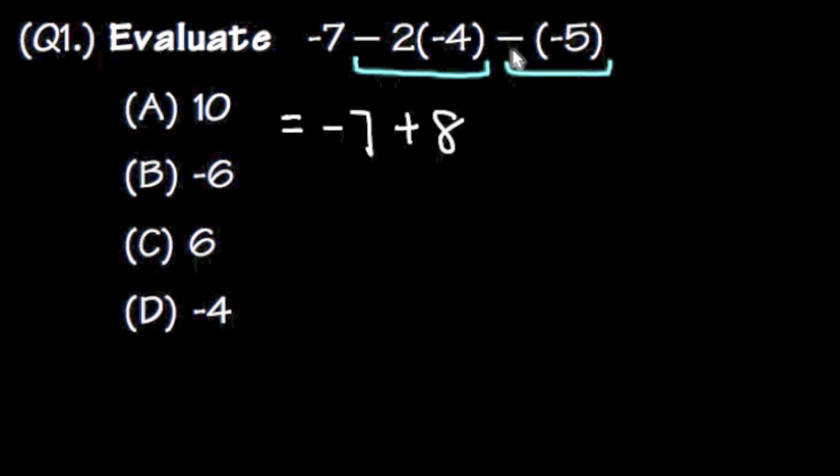And for this part, this is the same as saying negative times negative, which also turns out to be plus and then you have the 5 right here.